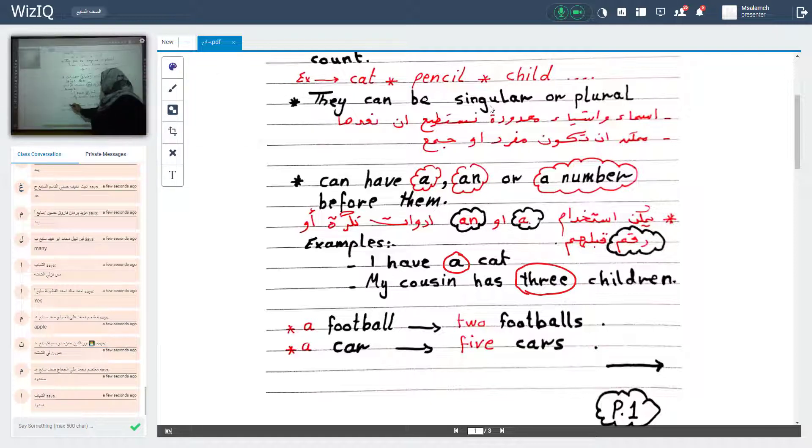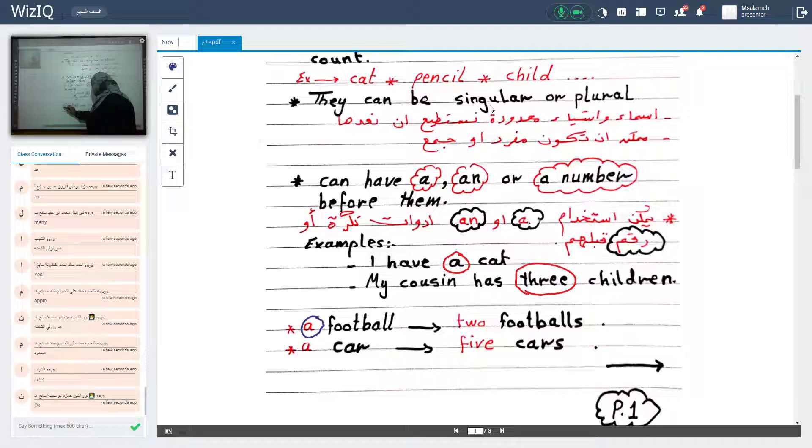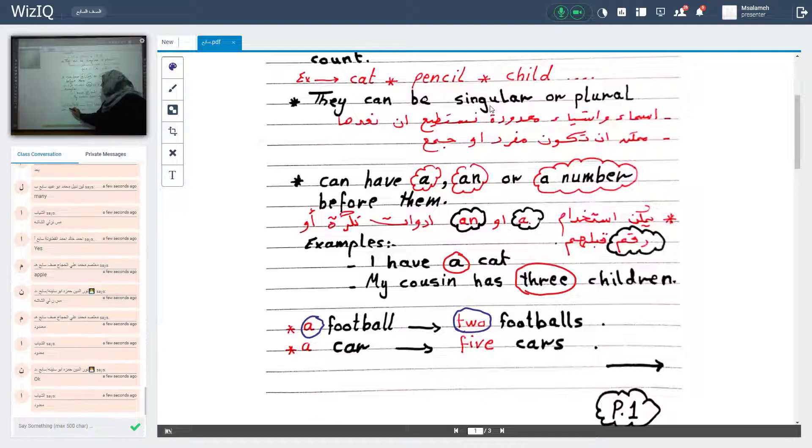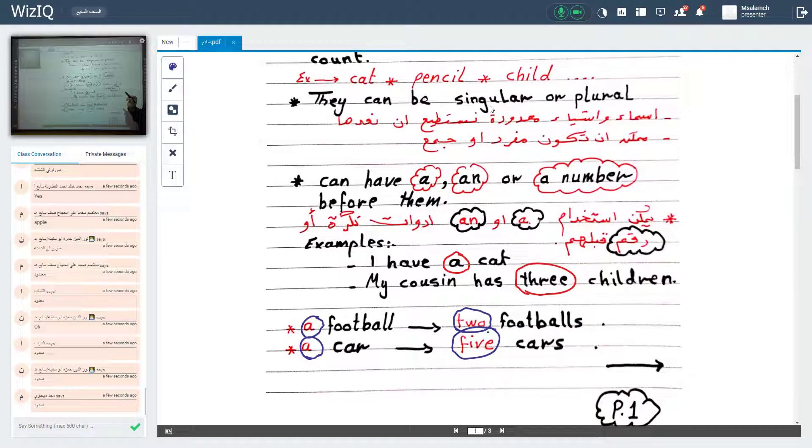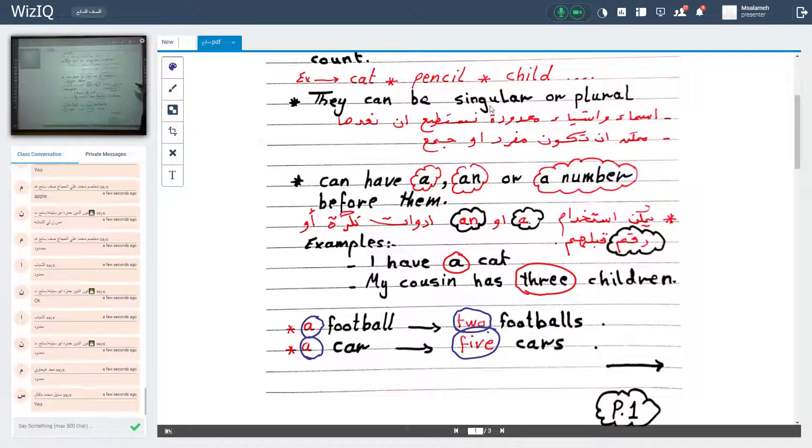Look at here. A football. Two footballs. A cat. Five cars. Is it clear my student? Any question? It's very easy.